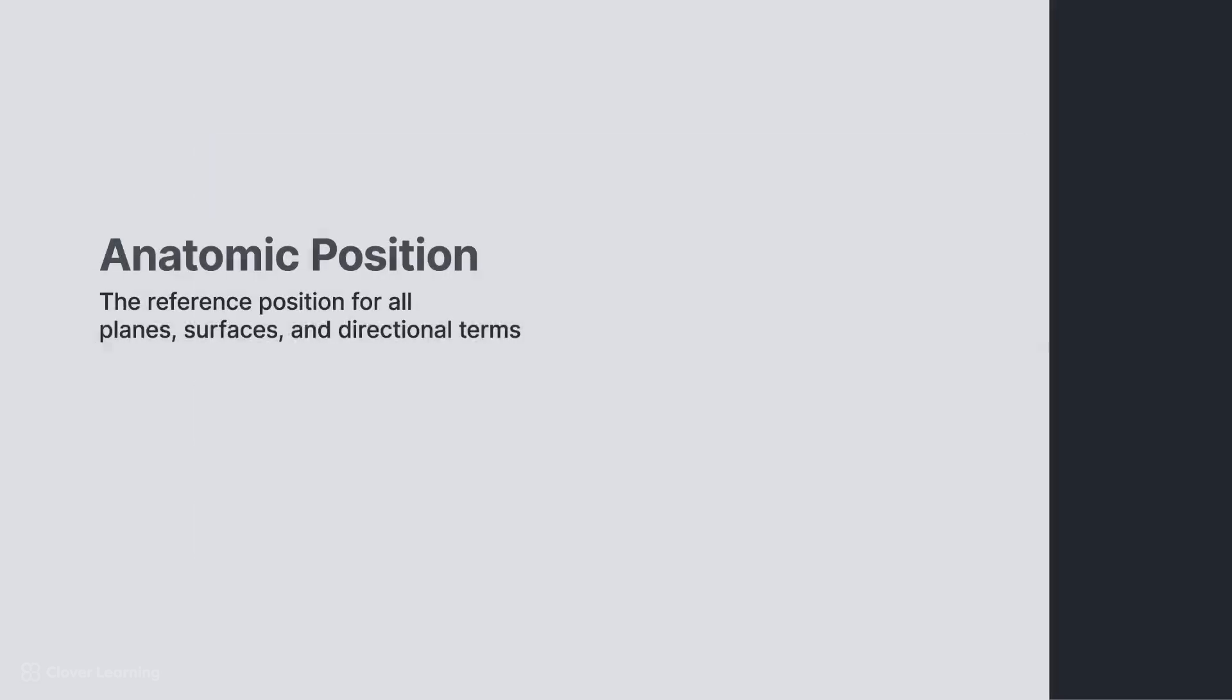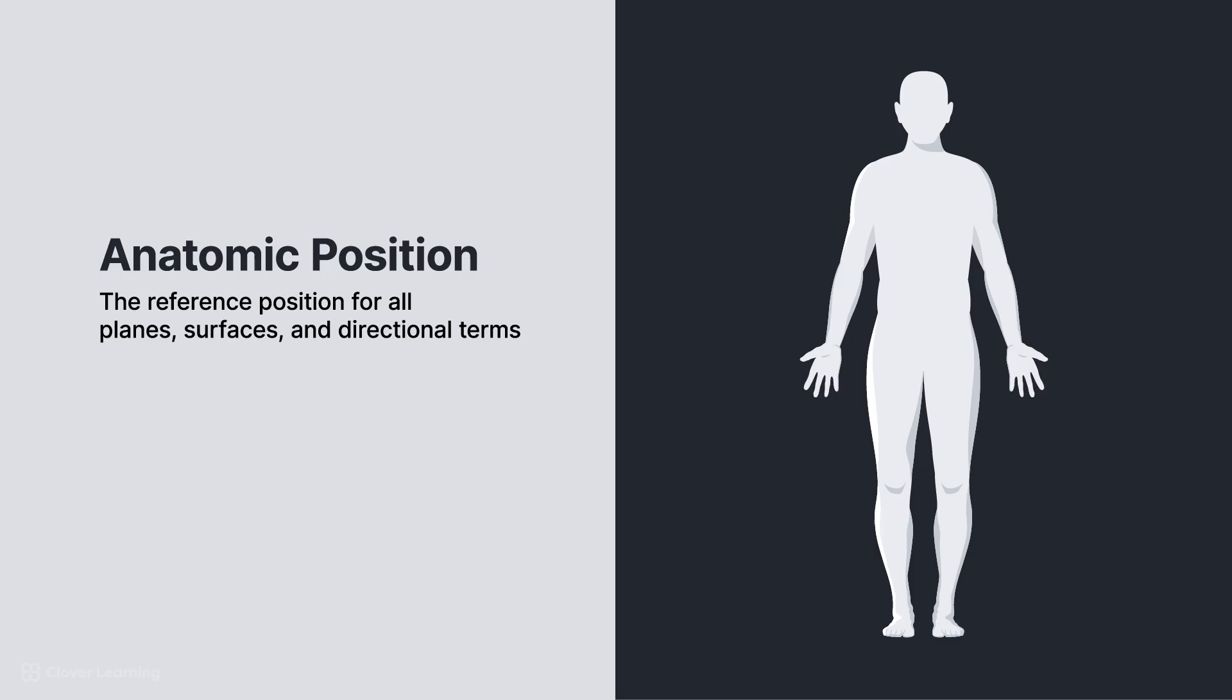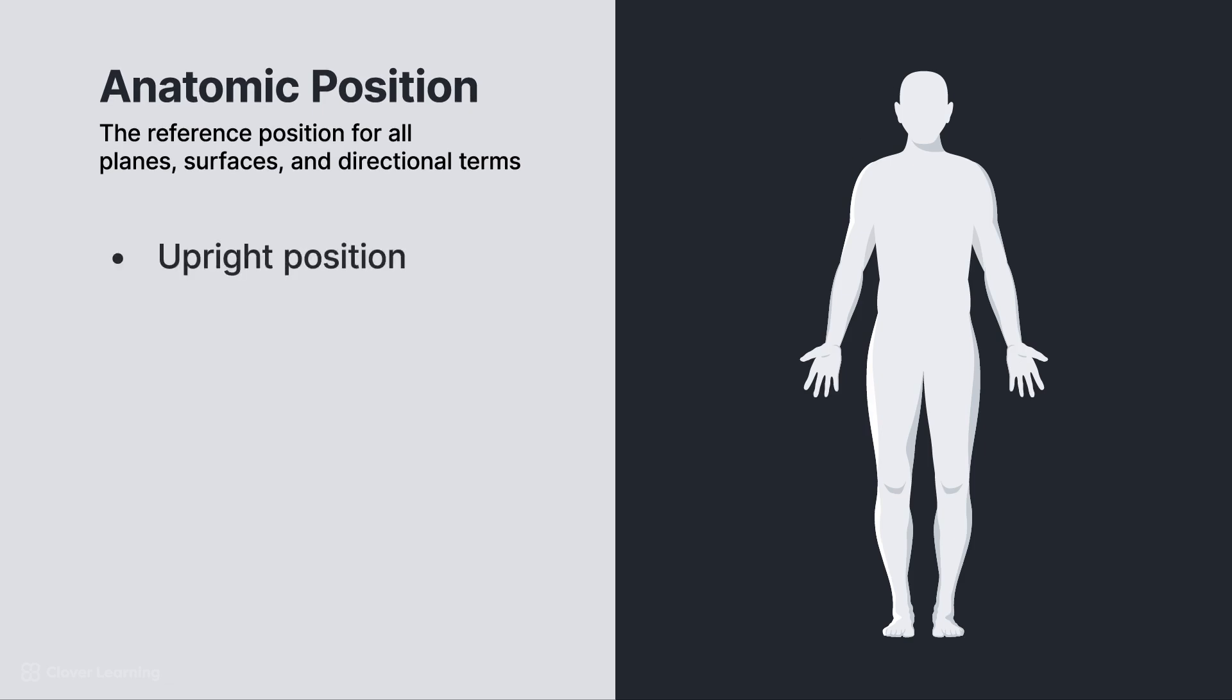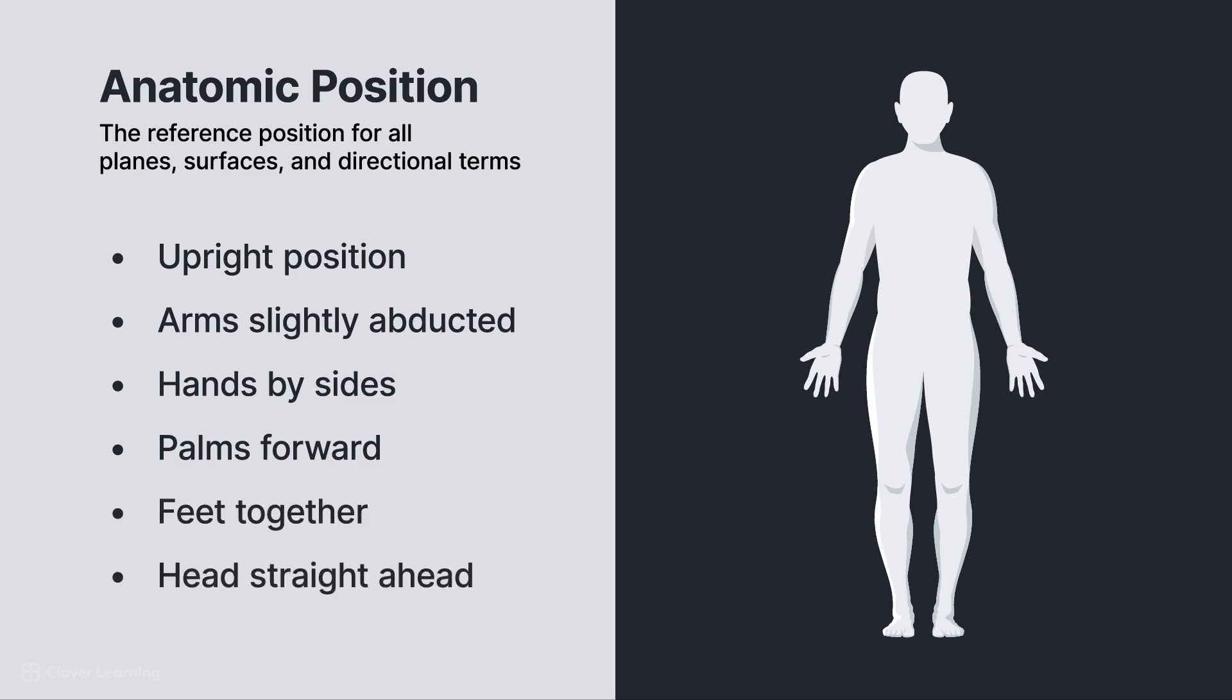When discussing radiographic positioning, anatomic position is the reference position for all planes, surfaces, and directional terms. Anatomic position is an upright position with arms slightly abducted, hands by the sides, palms forward, feet together, head directed straight ahead. This is also a general rule for displaying radiographs, as if the patient is facing the viewer in anatomic position.